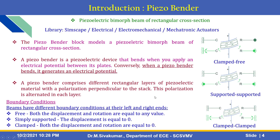The bimorph beam has different boundary conditions at its left and right ends. The first condition is free, where both displacement and rotations are equal to any value. The second is simply supported, where displacement is equal to zero. The third is clamped, where both displacement and rotations are equal to zero.